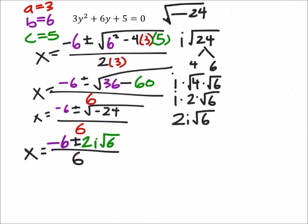All over 6. Now, we do have to be careful, though, with simplifying at this point. So, we know the 6 and the 6 go into each other, but the 2 and the 6 do as well.